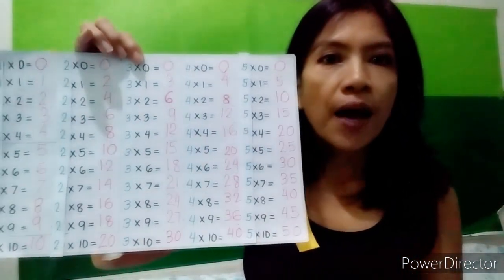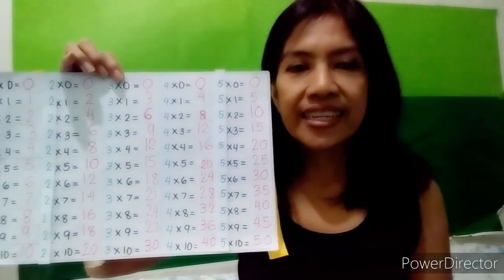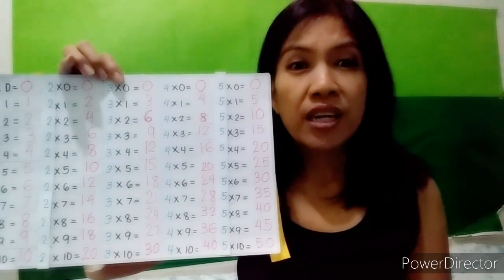I would like to share an approach on how to teach multiplication. Sometimes when you show them the table and ask them to memorize it, it's a bit hard for them. So I give them a strategy to understand why there's an answer for that set of multiplication — it's not all about memorization. I explain how each number gets its answer so that they understand and appreciate the multiplication table.